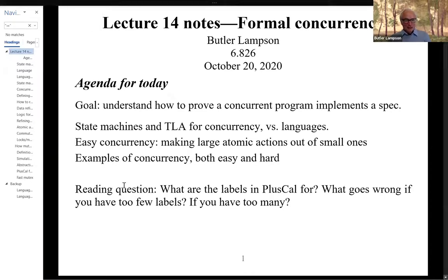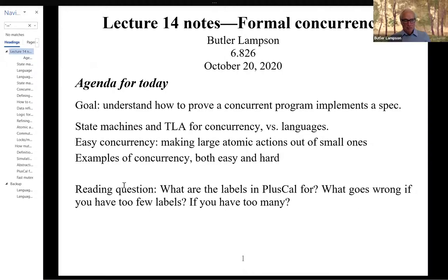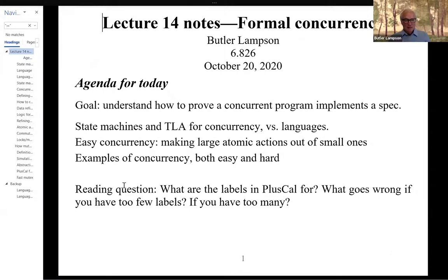So today, this lecture is not really going to be about PlusCal. I couldn't find a paper that was a good match for what I wanted this lecture to be about. But I'll talk a fair amount about the relationship between the things I'm going to be saying and the PlusCal paper. The goal for today is to really understand how to prove that a concurrent program implements a spec, and also to learn some things about what's practical for concurrency — what's easy and what's hard. The key issue is how do you make large atomic actions out of small ones?